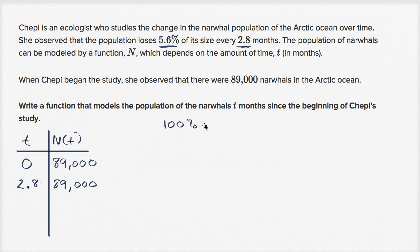Let me be clear, if you lose 5.6%, you are going to be left with 94.4%. So another way of saying that the population loses 5.6% of its size every 2.8 months, is to say that the population is 94.4% of its size every 2.8 months. After every 2.8 months, the population shrinks 5.6%, or it's 94.4% of the population at the beginning of those 2.8 months.